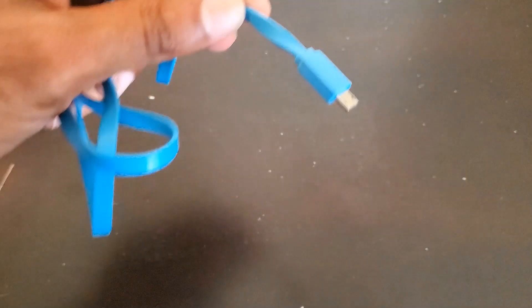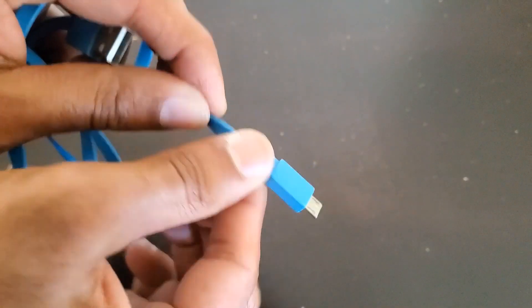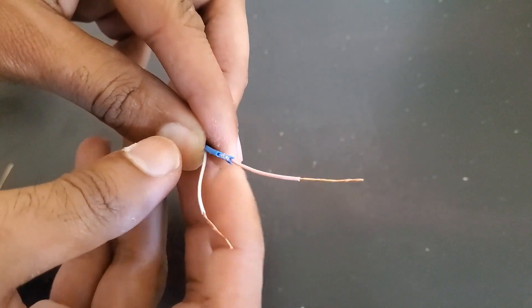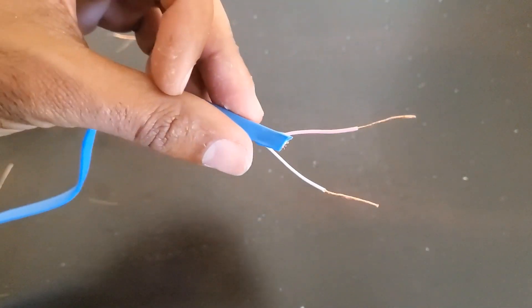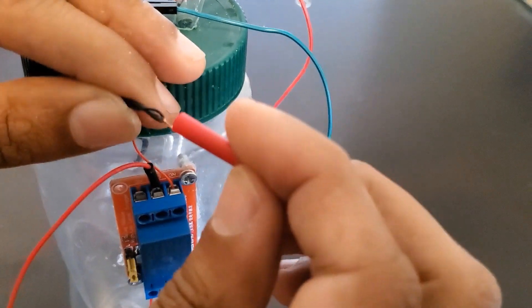Then we need to take our USB cable and cut off the smaller terminal and peel back the wiring. The red wire will be the positive and the white wire in this case will be the negative.